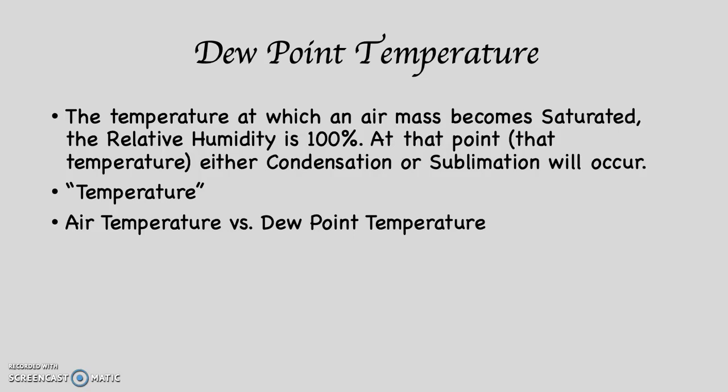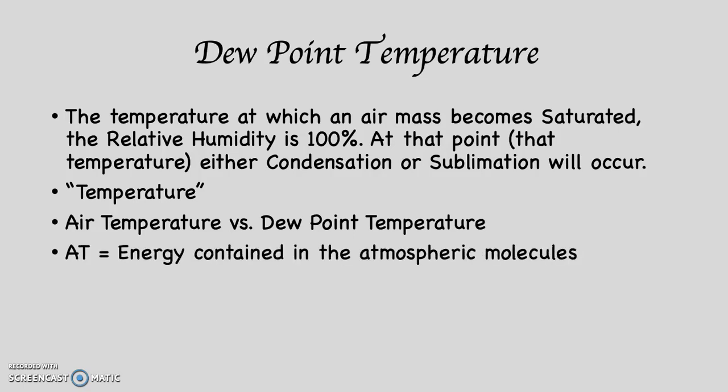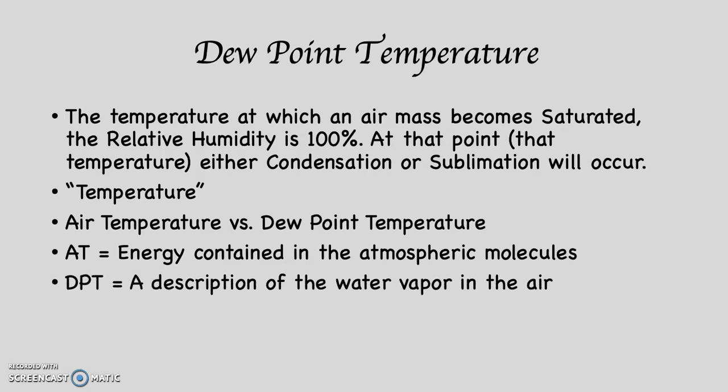Air temperature is the energy contained in the atmospheric molecules. If I said to you it's 65 degrees today, you know what that means; if I said tomorrow it's going to be 95 degrees, you know exactly what I'm talking about. Dew point temperature, on the other hand, is a description of the water vapor in the air — it's different. This is going to give you an idea of what relative humidity is, how humid it feels outside.